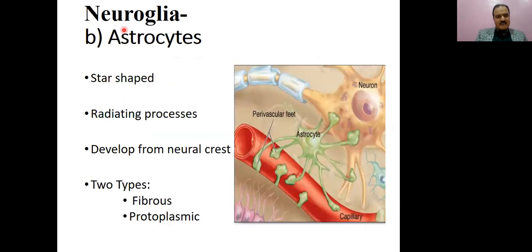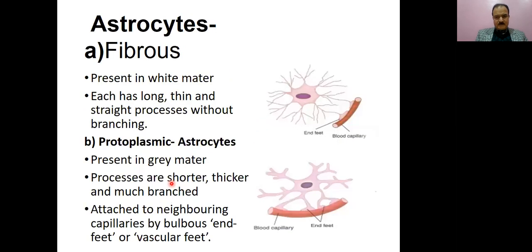Astrocytes — 'astro' means star — so they are star-like cells with multiple processes. The processes go towards capillaries where they develop bulbous, foot-like structures and adhere to the capillaries. There are two types: fibrous astrocytes, present in white matter, each with long, thin, straight processes without branching going towards capillaries; and protoplasmic astrocytes, present in gray matter, with shorter, wider, thicker processes that have branchings. Both types are attached to neighboring capillaries by bulbous end-feet, also called vascular feet.